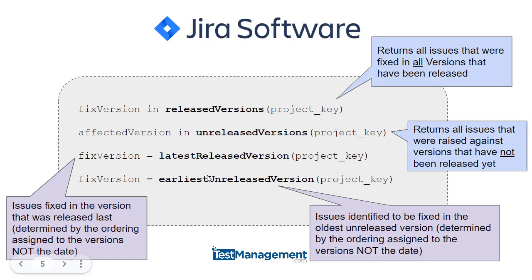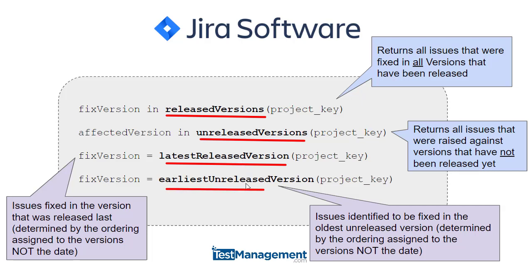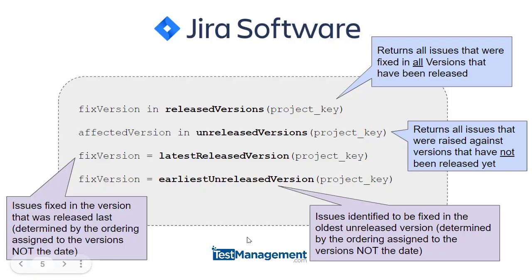In summary, you've got four functions that you'll find useful: releasedVersions, unreleasedVersions, latestReleasedVersion, and earliestUnreleasedVersion. That should give you all you need to power search for issues based on versions using JQL.